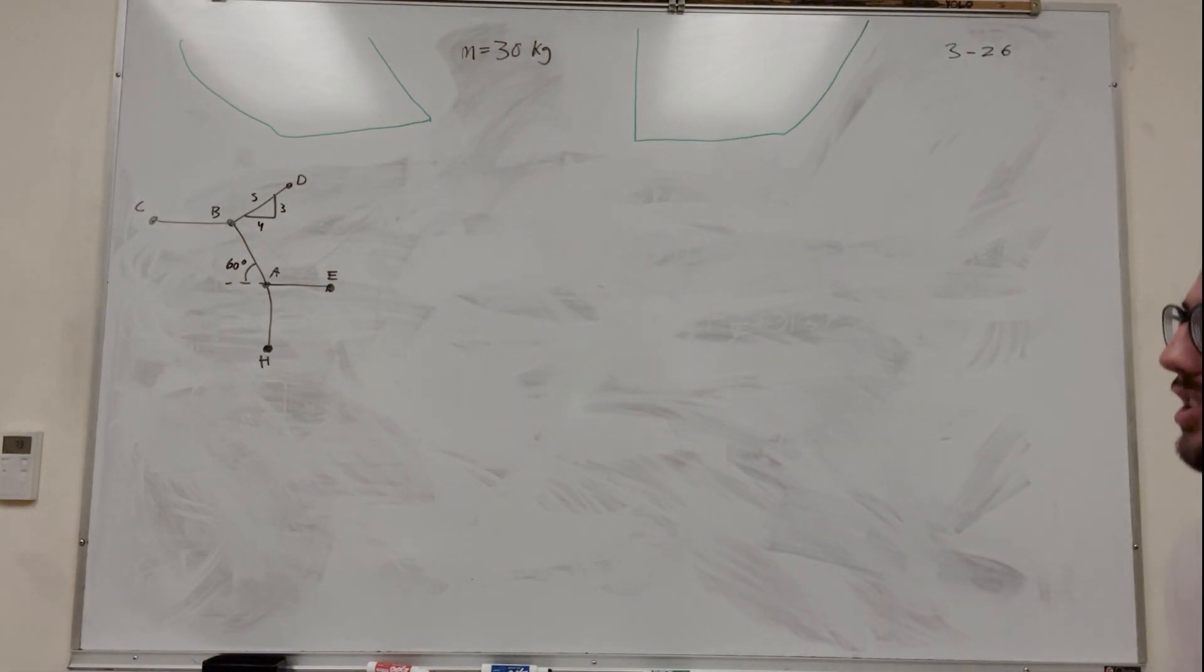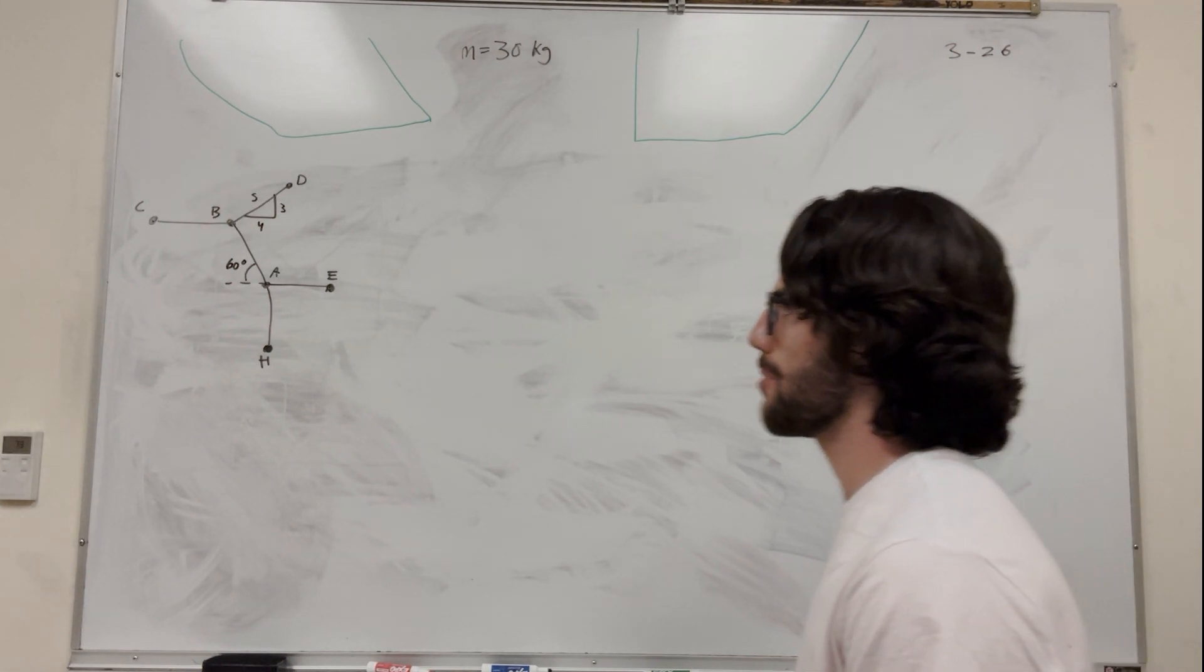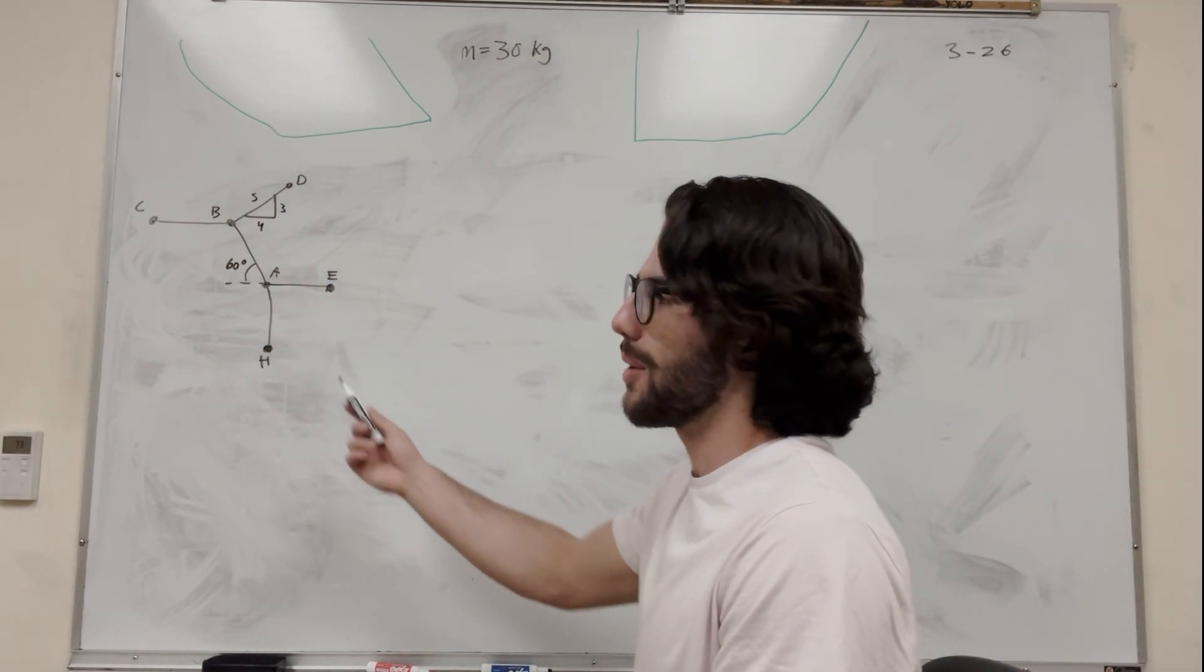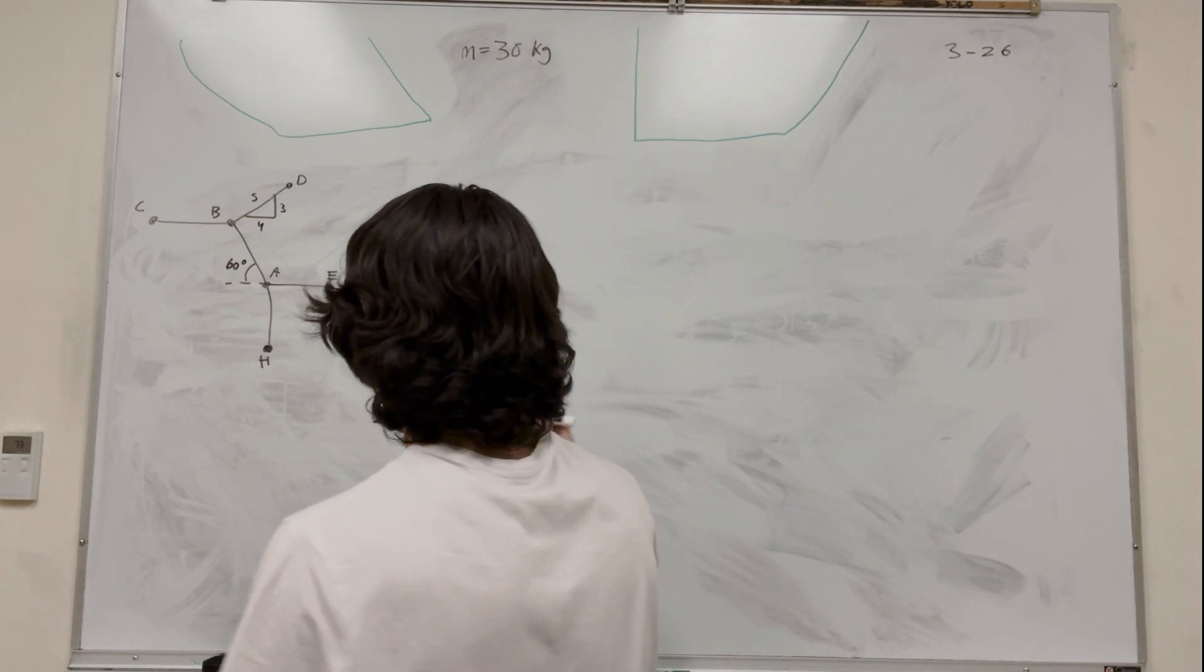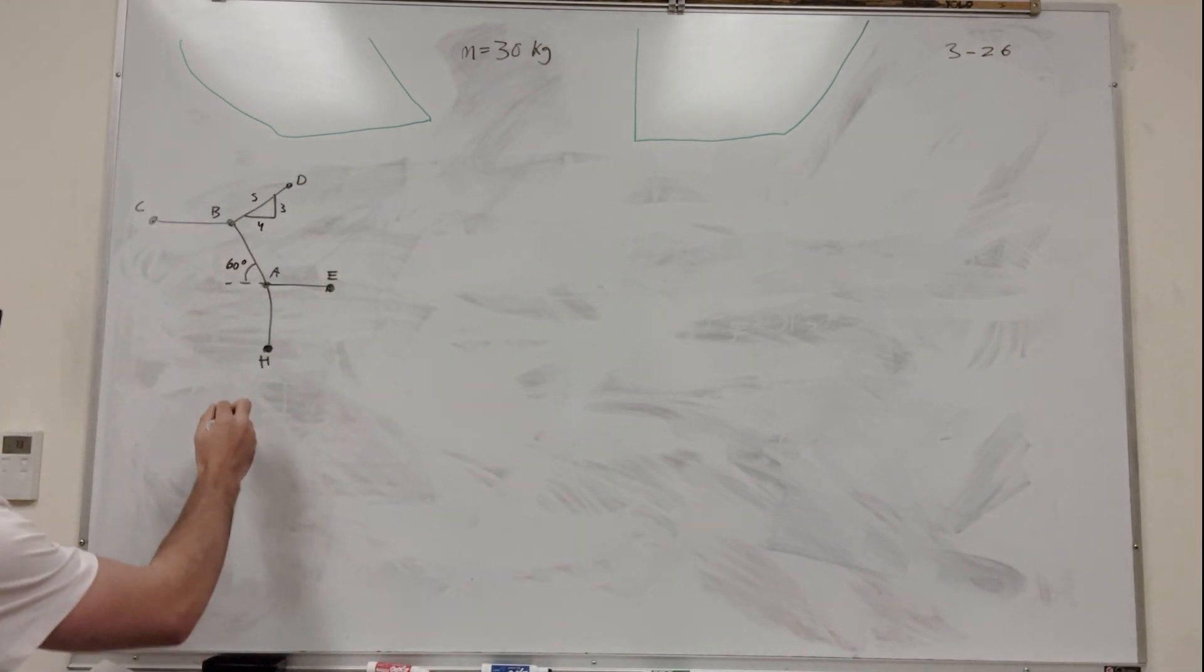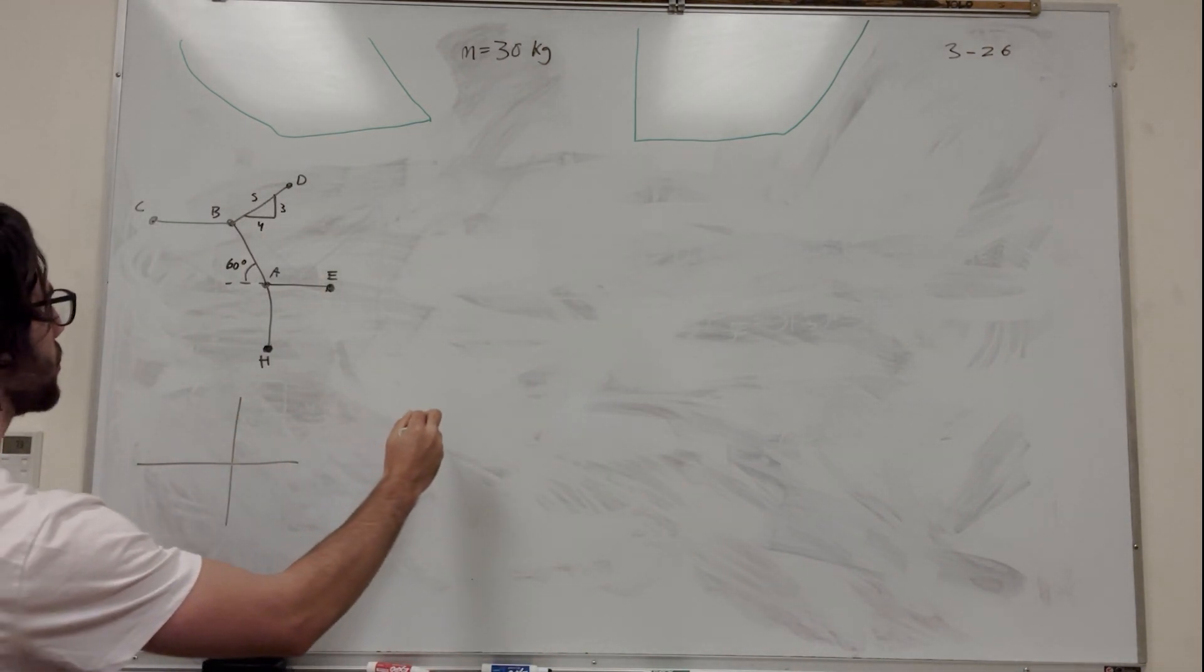So what we're going to do is start with the force body diagram. But in this case, we're actually going to need two force body diagrams, right? At any point we pick, there's going to be more cables that way you're not accounting for. So let's make two force body diagrams. Let's start with one at A and let's do one at B.